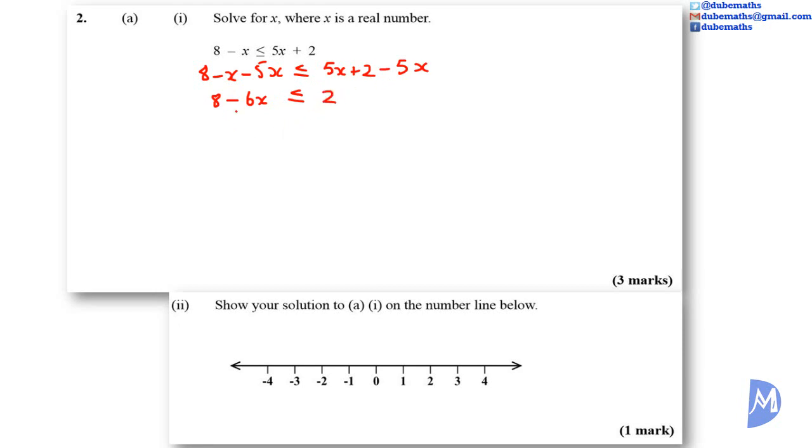We want to carry across the 8. We are going to subtract 8 from both sides. 8 subtract 8 is 0. So you have minus 6X. It's less than or equal to negative 6. We are going to divide both sides by negative 1. Remember, with inequalities, when we divide by a negative number, the sign reverses.